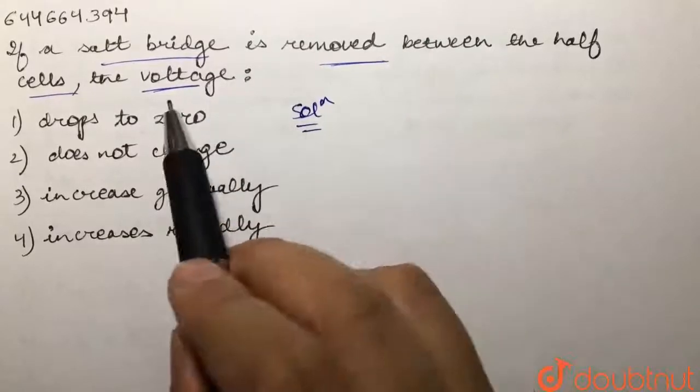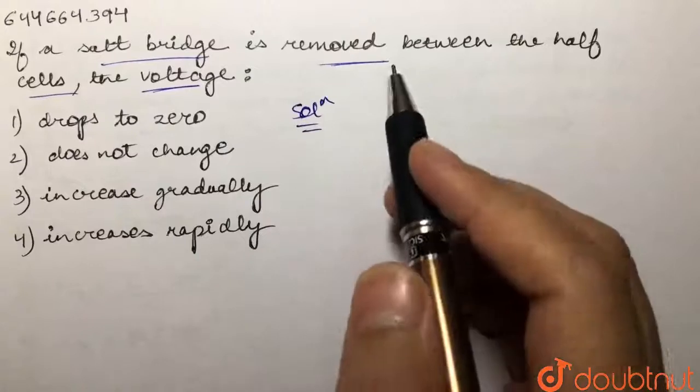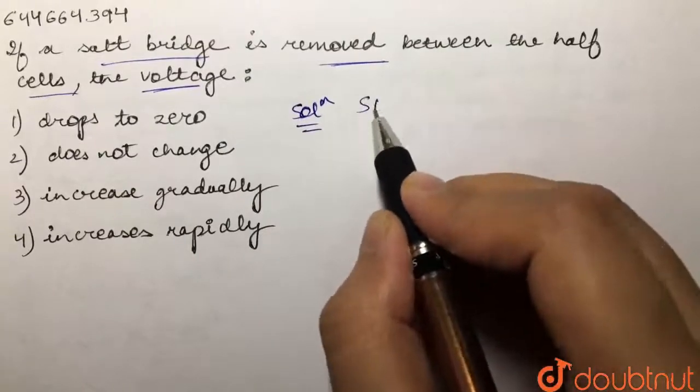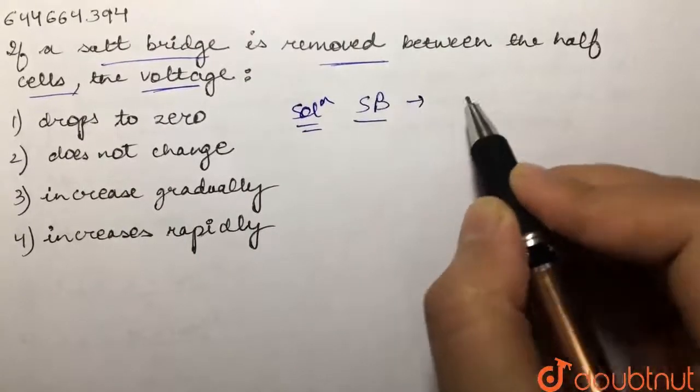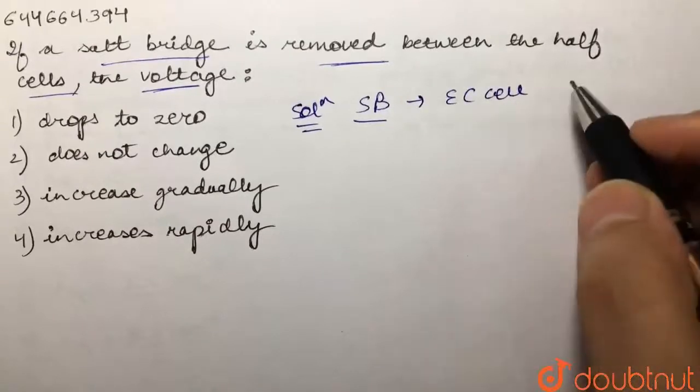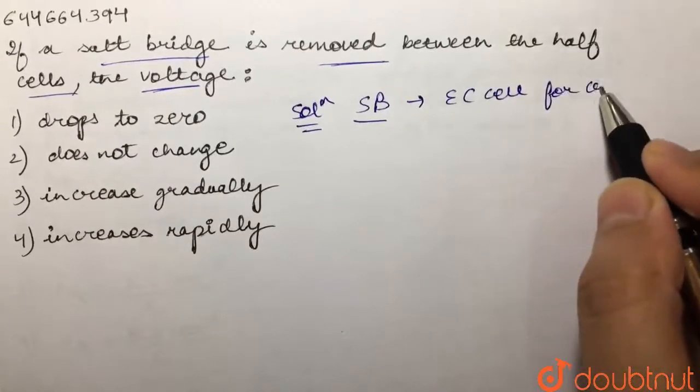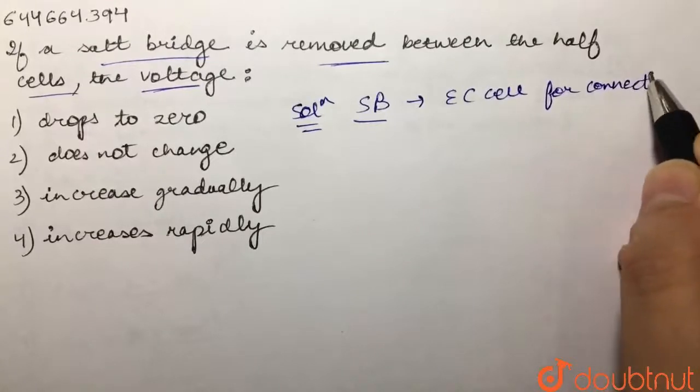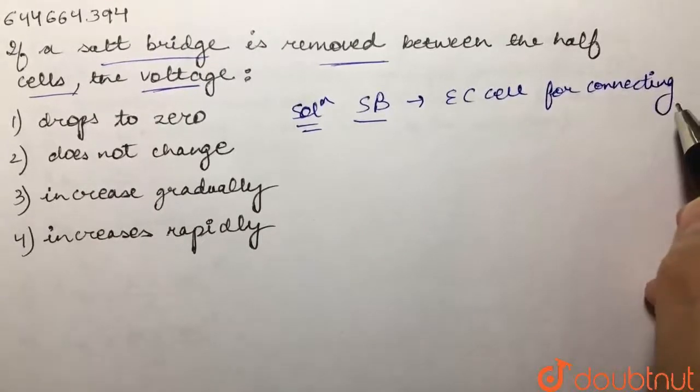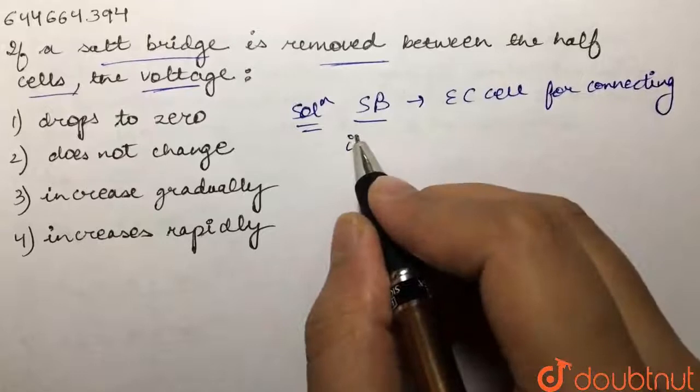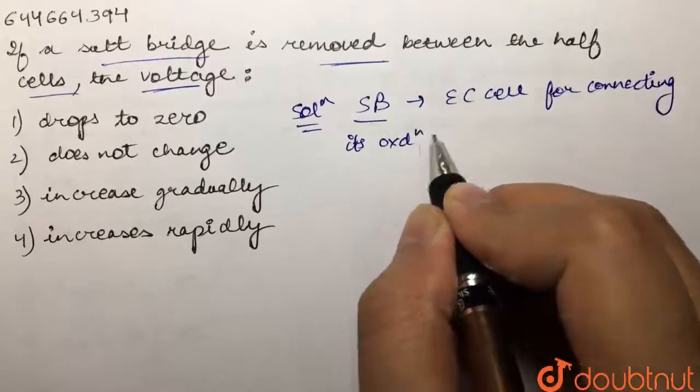bridge between the half cells in our cell. Salt bridge is a device that is used in an electrochemical cell for connecting its oxidation and reduction half cells—its oxidation and